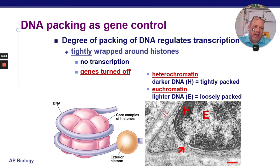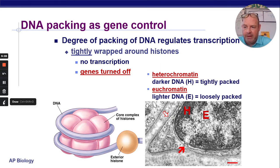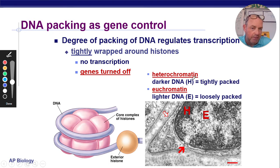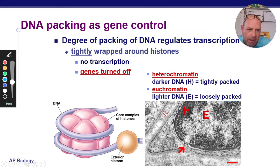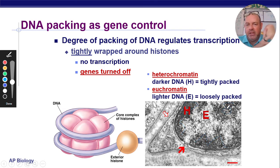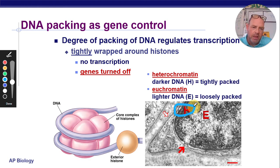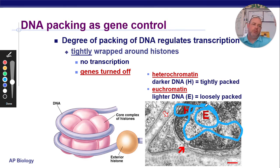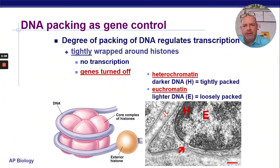So we have two terms here. Heterochromatin, which is the tightly packed, and euchromatin, which is more loosely packed. Heterochromatin is tight and euchromatin is loosely packed. You can actually tell this in the picture — wherever you see the really dark sections, that means the DNA is packed really tightly because light in the microscope is not coming through, so it's really dense. Those areas are heterochromatin. The light areas you see throughout is the euchromatin — more loosely packed, more like chromatin instead of really tightly wrapped DNA.